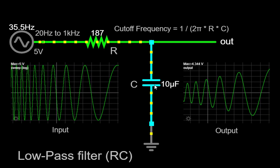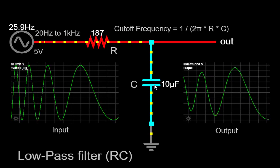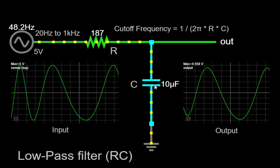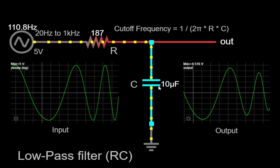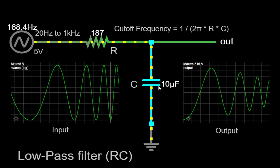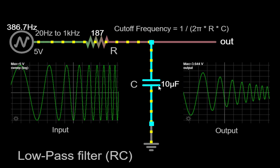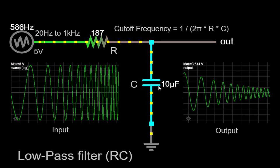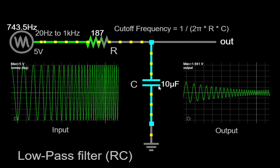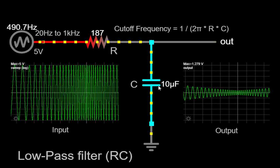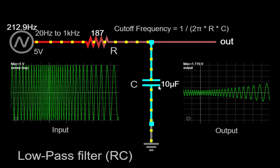However, as the frequency increases, the time available for the capacitor to charge and discharge diminishes. At high frequencies, the capacitor is unable to fully charge or discharge before the next cycle begins. This limited charging and discharging time leads to a reduction in the capacitor's ability to pass the AC signal effectively. As a result, the amplitude of the output signal decreases, indicating that the higher frequency components are being attenuated or filtered out by the RC circuit.